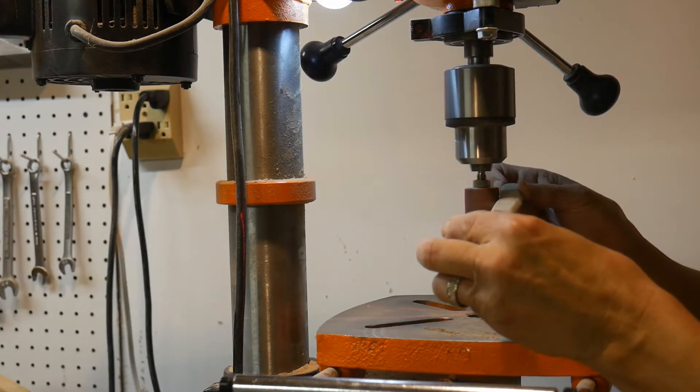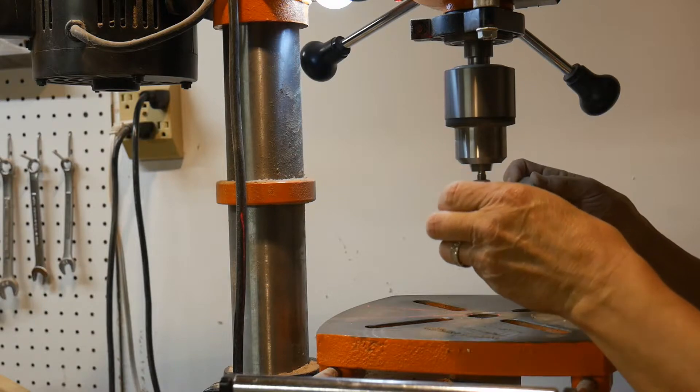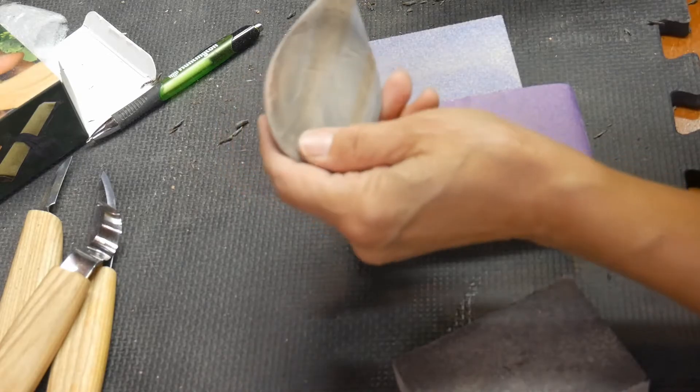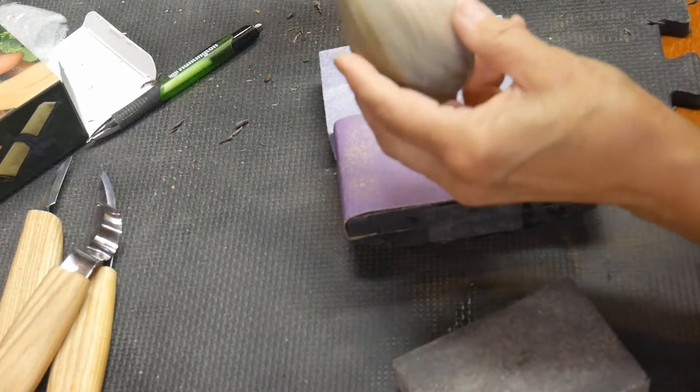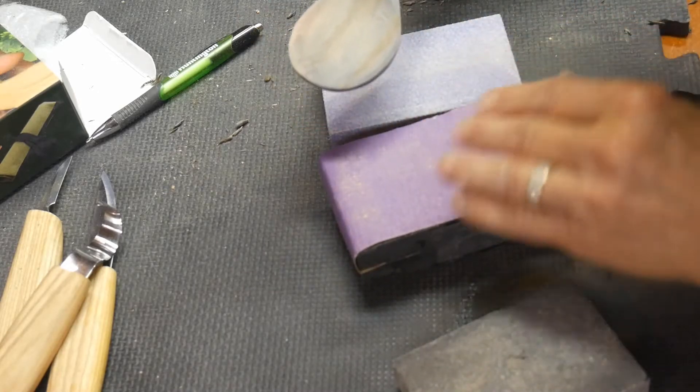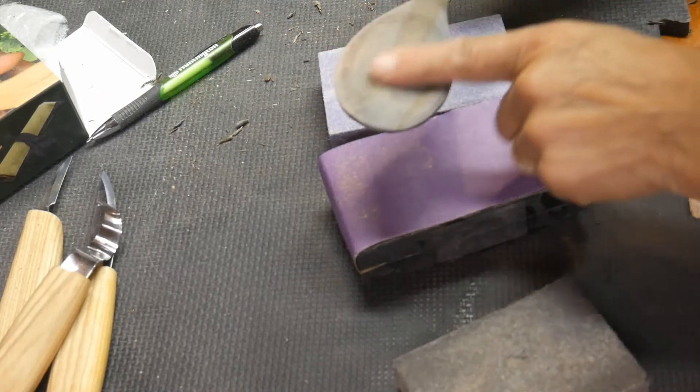As you can see by this right here, I went back to my drill press to sand the handle. Now that I have the shape the way that I like it, it's time to perfect it with hand sanding and going down or up in grits to make it smoother and smoother.